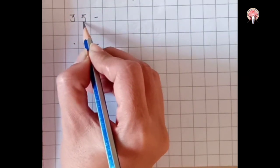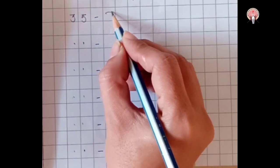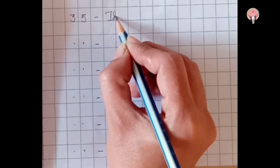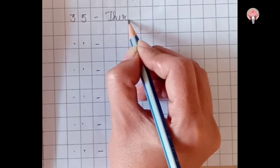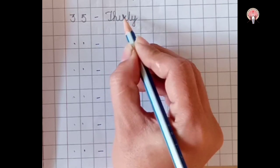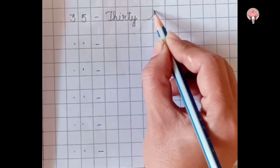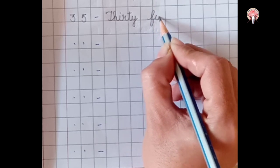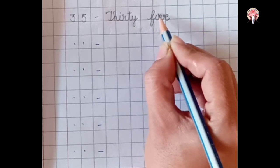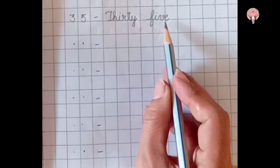3, 5, 35. Thirty, T-H-I-R-T-Y, 30. Five, F-I-V-E, 5. 35.